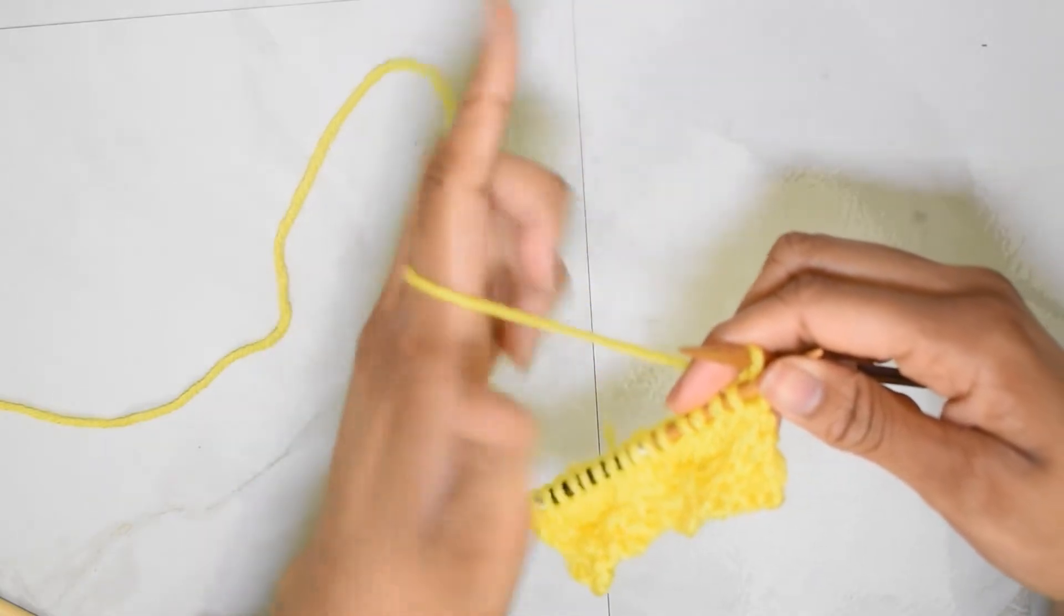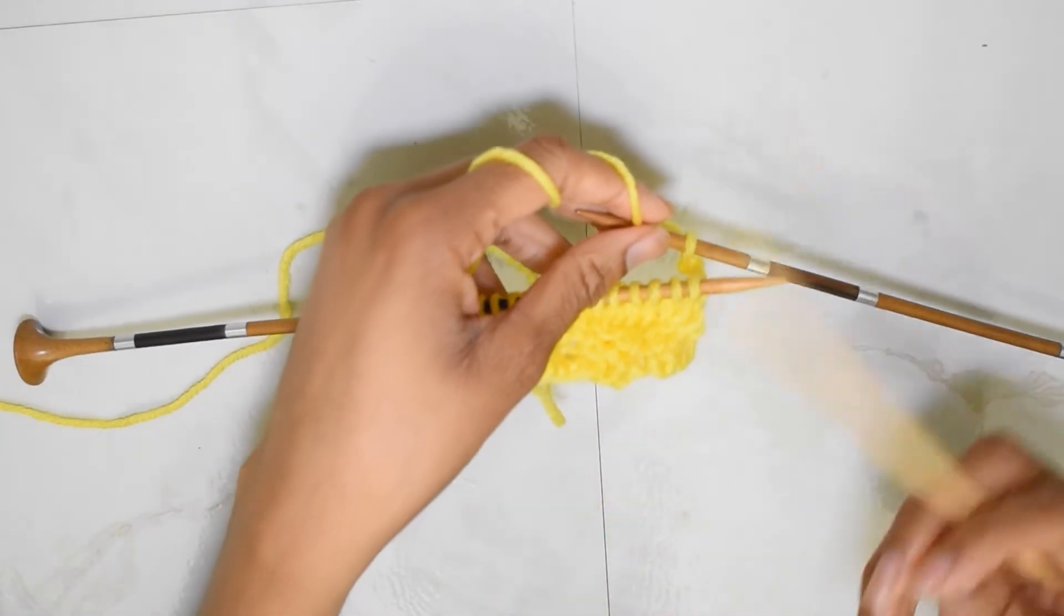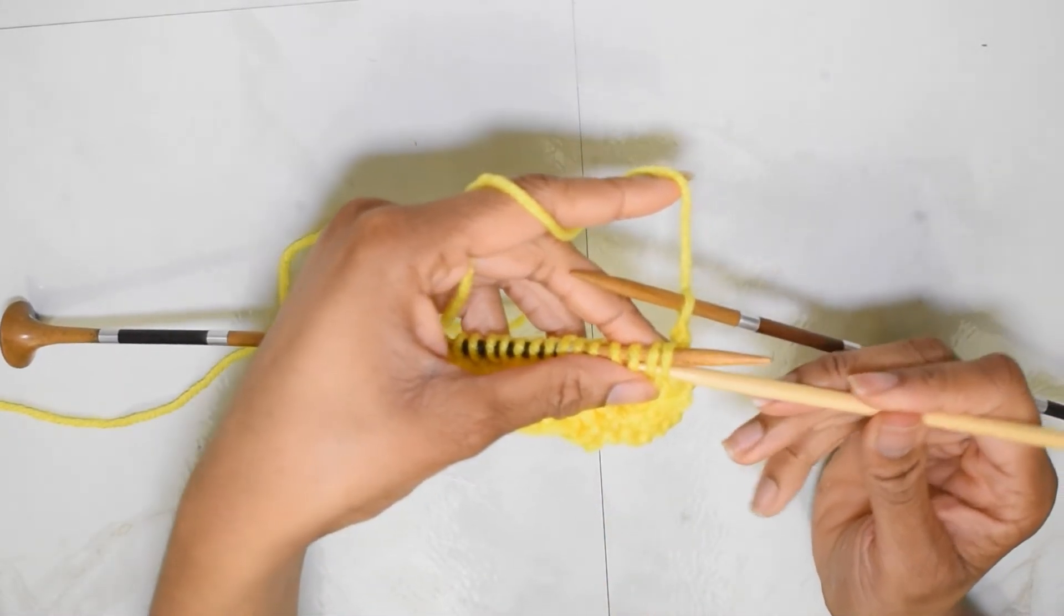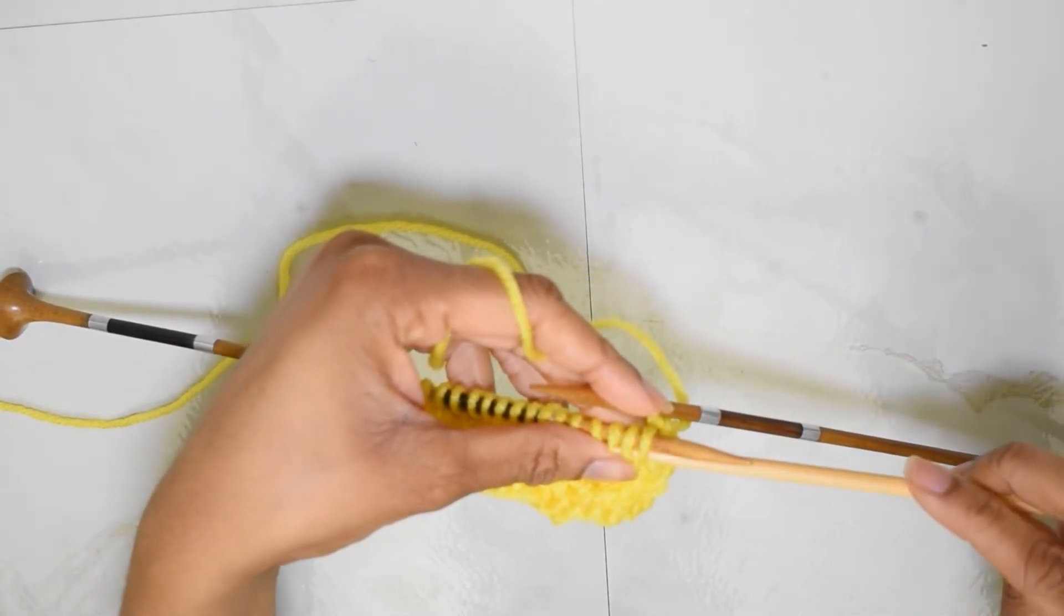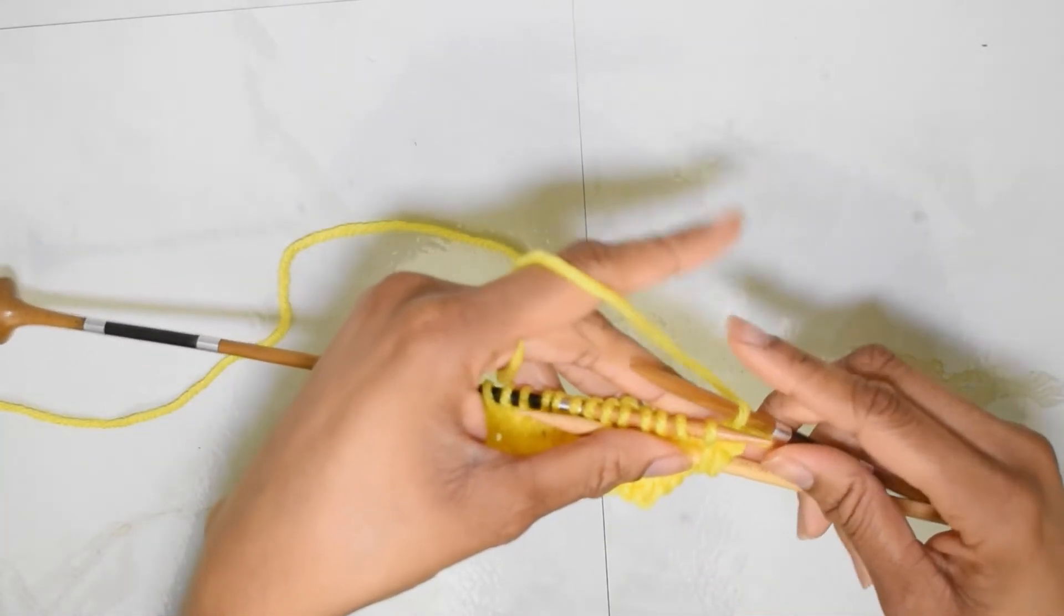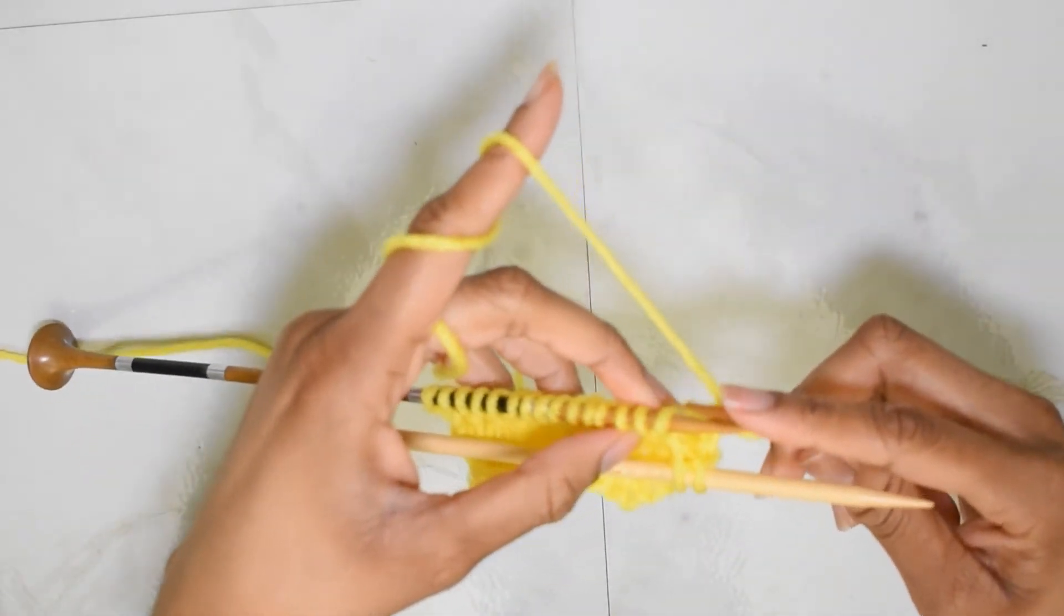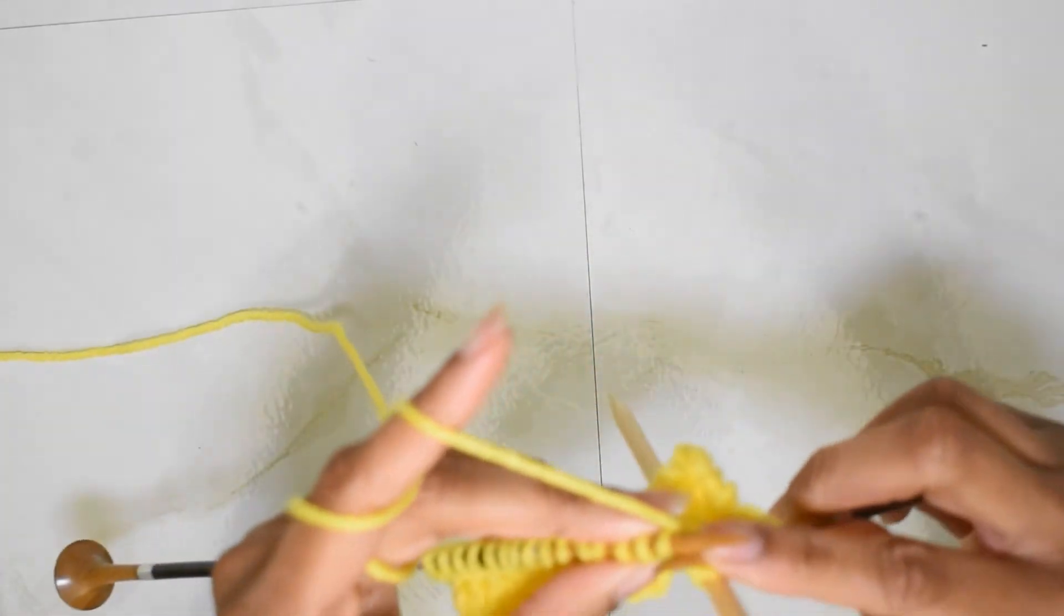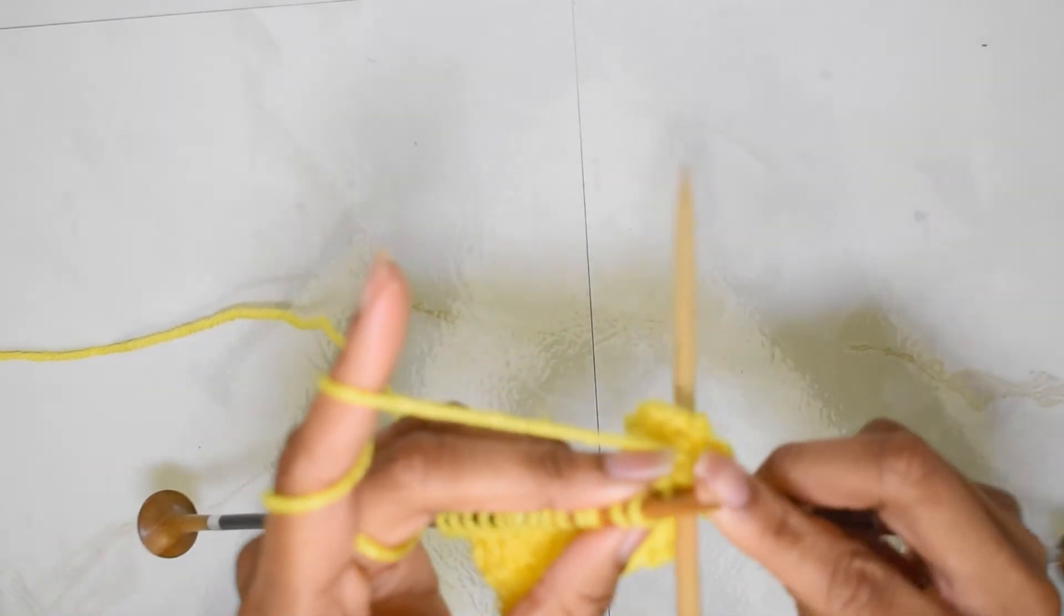All right, so now I'm on row seven and I've knitted my selvage stitch. And what I'm going to do is get my cable needle out again. And I'm going to slip two of these stitches off and I'm going to leave it towards the front, alternating from basically what I did in row three.